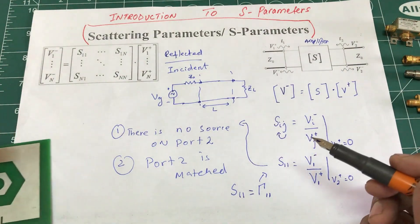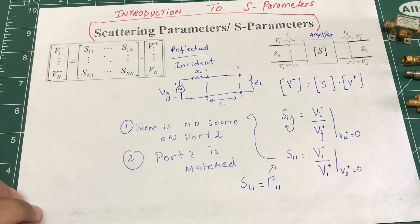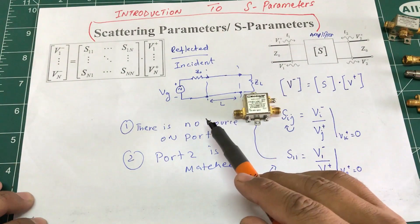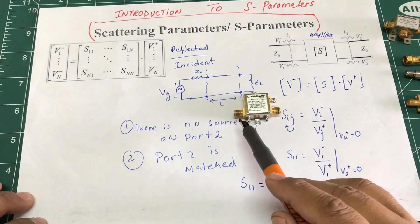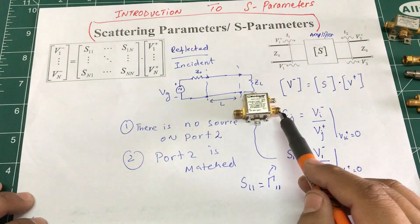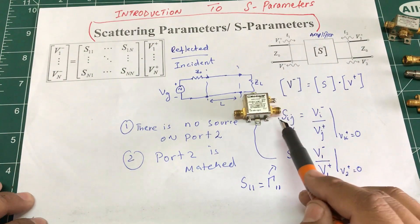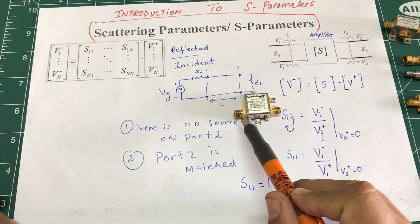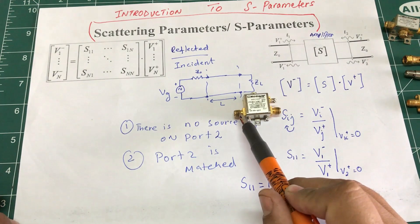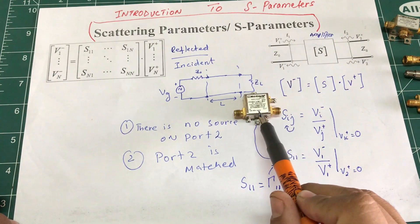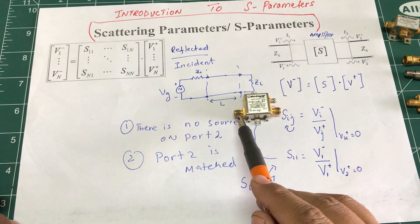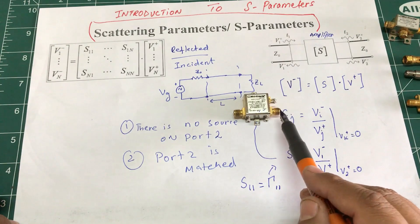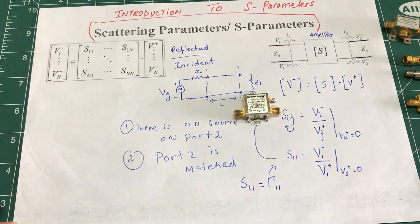Now consider a two-port device such as an amplifier. We are not only interested in the reflection at each port, but also in the gain. Whatever voltage is input should be amplified — for example, if the gain is 10 and I input one volt, I should get ten volts out. We need to express this gain using S-parameters.